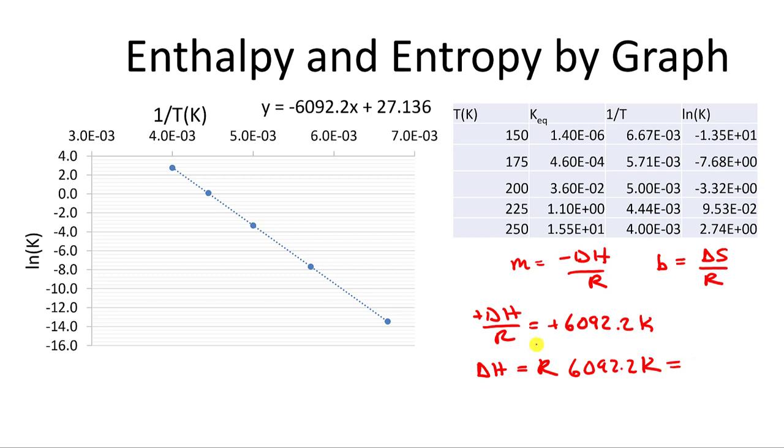R is 8.314 joules per mole times Kelvin. And so I'll get, for that number, 50,815, with three sig figs in the answer. This is going to be in units of joules per mole or 50.8 kilojoules per mole.